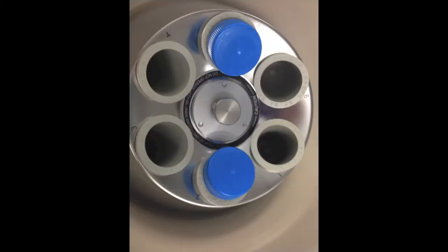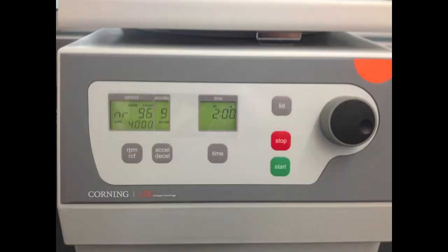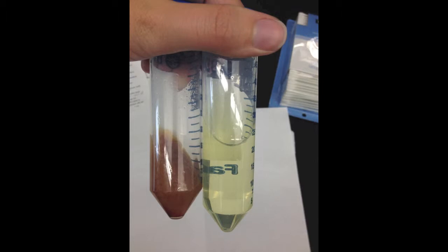Your instructor will show you how to properly operate the centrifuge. You should centrifuge the vials for 2 minutes at 4000 rpm. After centrifugation, the vials will have two layers. Carefully pour the liquid layer into another tube and discard the solid layer.